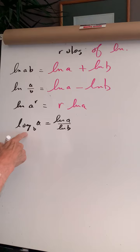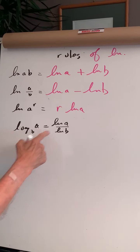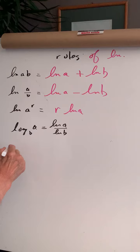This one's interesting. The log base B of A is ln A over ln B. Now let's show that that's true.